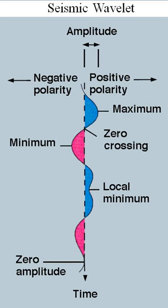The wavelet transform is often compared with the Fourier transform, in which signals are represented as a sum of sinusoids. In fact, the Fourier transform can be viewed as a special case of the continuous wavelet transform with the choice of the mother wavelet ψ(t) = e^{−2πit}. The main difference in general is that wavelets are localized in both time and frequency whereas the standard Fourier transform is only localized in frequency.